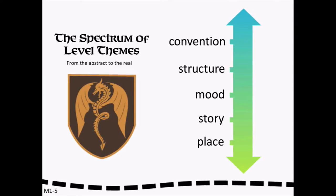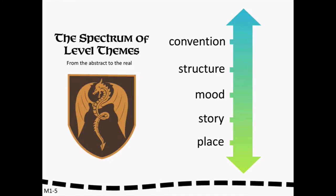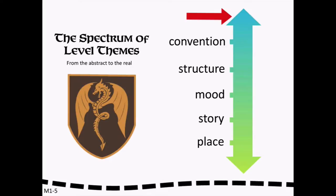Level themes fall on a spectrum, a range stretching from the plausible to the abstract. Level content on the plausible end of the spectrum is designed and built to be more believable. Notice that I used the term plausible and not realistic. That's because even if a game level needs to be believable, it may still depict an imaginary place like the inside of a spaceship or the throne room in a castle in Middle Earth. If a level falls at the plausible end of the spectrum, it's built to reinforce its believability and the realism of the space for the player. All of the content in the level makes sense, and there are very few, if any, abstract conventions. At the opposite end of the spectrum are levels built to be almost entirely abstract — they represent function over form, don't look real at all, and aren't meant to represent any kind of believable space. Let's talk about the points on the spectrum and what they're commonly used for.